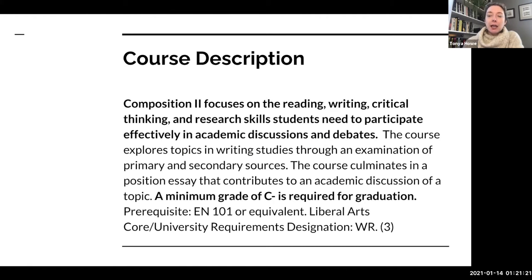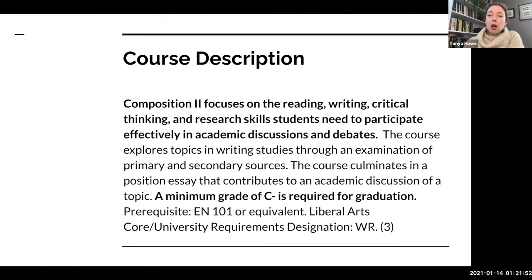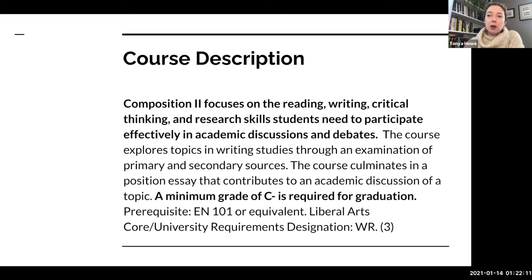The course description is something I definitely want everybody to be aware of. When you get a syllabus for a course or look at your course schedule at Marymount, EN 102 is the second of two courses in the university writing requirement for graduation. You will all have taken EN 101. Now we're engaged in EN 102 Composition 2, which will focus on the kind of writing you need to participate effectively in academic discussions, using academic sources and writing for an academic audience.